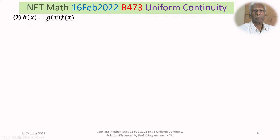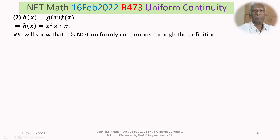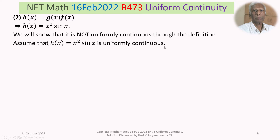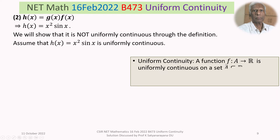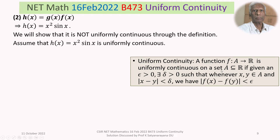We now go to option 2: H(x) = g(x) · f(x) = x² sin x. We will show it is not uniformly continuous using the epsilon-delta definition. Recall: F from A to R is uniformly continuous on A if, given ε > 0, there exists δ > 0 such that whenever x, y ∈ A and |x − y| < δ, we have |F(x) − F(y)| < ε. Assume H(x) = x² sin x is uniformly continuous on R.